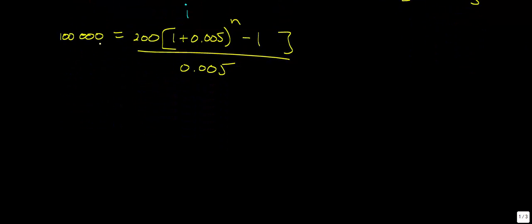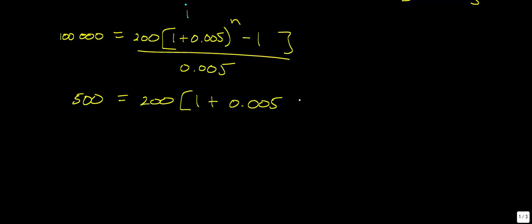Before, we solved this by moving values to one side and using technology. This time we'll do something different. First, I'm going to get rid of the fraction by multiplying both sides of the equation by 0.005. Multiplying 100,000 by 0.005 gives 500. So 500 is equal to 200 multiplied by 1 plus 0.005 raised to the power of n, minus 1. Then I divide both sides by 200, giving 2.5.